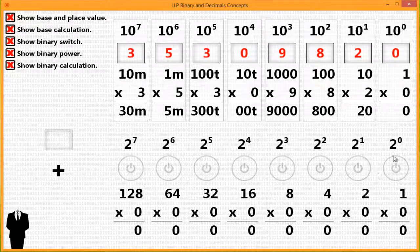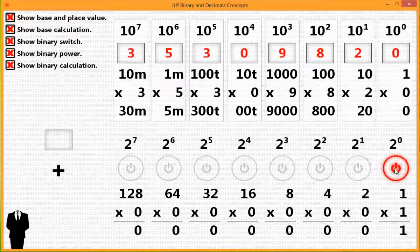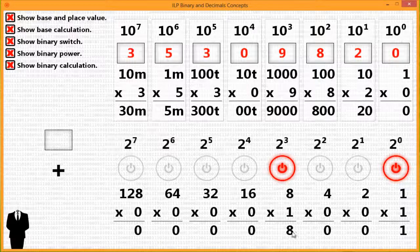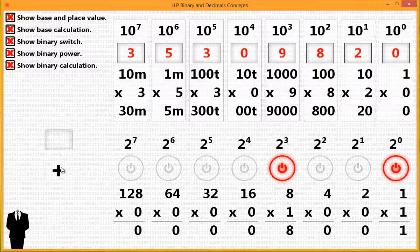If I was to go to 2 to the 0 power and turn the switch on, that means I would have the number 1. And if I was to go to the 2 to the 3rd power and turn the switch on at that place, that means I would have 8. In total, I then would have 9.